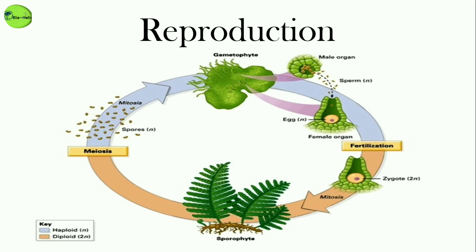The sporophyte is the dominant phase of the pteridophytes. In the majority of pteridophytes, all the spores are of similar kinds, and such plants are called homosporous. But in some genera like Selaginella or Salvinia, which produce two kinds of spores — macrospores and microspores — they are known as heterosporous.